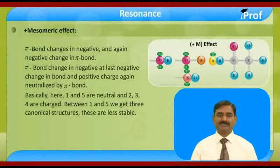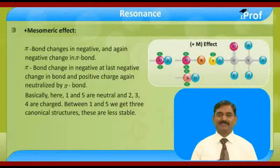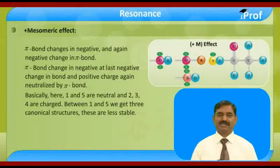Basically here, structures one and five are neutral while two, three, and four are charged. Between one and five, we get three canonical structures. These are less stable — we will see the reason for this later on.